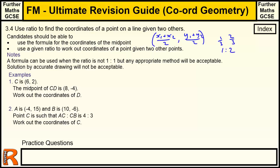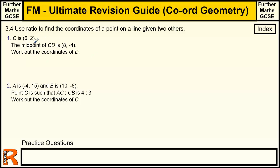OK, here we go, question one. So C is (6, 2). The midpoint of CD is (8, -4). Work out the coordinates of D. So C is at (6, 2). And the midpoint of CD is at (8, -4). So it's going to be further across and down. So that's C, that's the midpoint. And then we want D, which is going to be over here. And we've got to try and work out this.